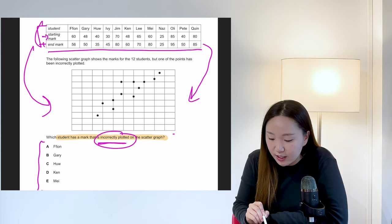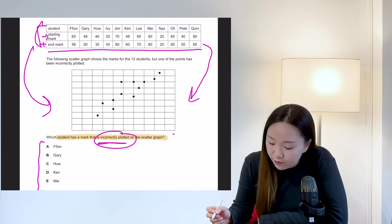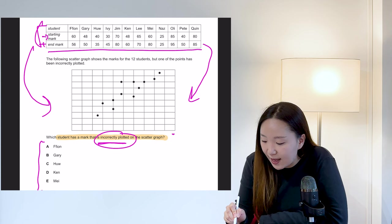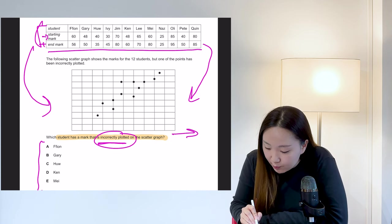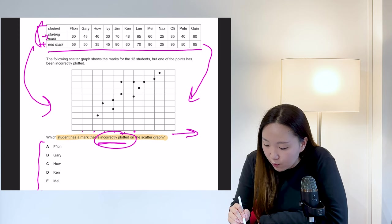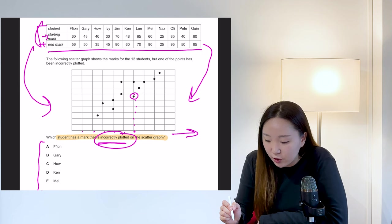Okay. We're looking for incorrectly plotted so we can just check here against these others. So starting with Fionn, if we start with Fionn and we say, let's try this way for starting mark first. So X axis for starting mark first, then we need one, two, three, four, five, six, and she's on 56 for the end mark. So one, two, three, four, five, and that is six. So that one could be correct.